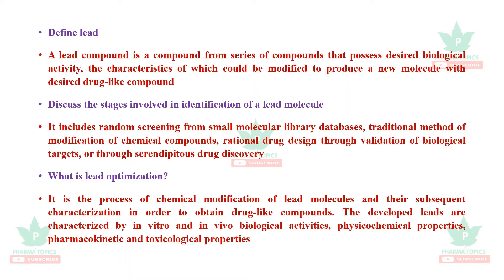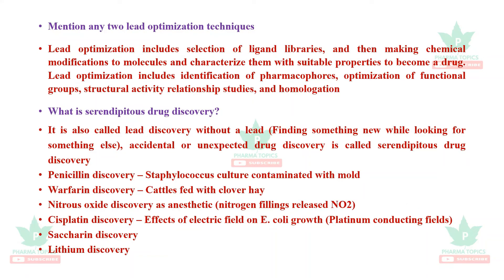The developed leads are characterized by in vitro and in vivo biological activities, their physicochemical properties, and pharmacokinetic and toxicological properties. Lead optimization techniques include selection of ligand libraries, making chemical modifications, and characterizing them with suitable properties to become a drug. It also includes identification of pharmacophores, optimization of functional groups, structure-activity relationship studies, and homologation.